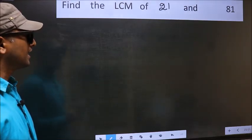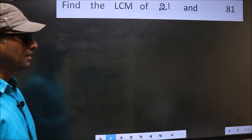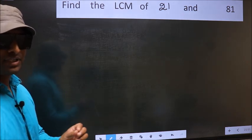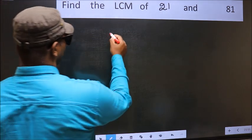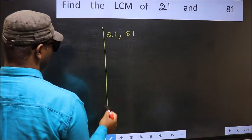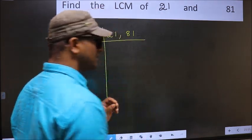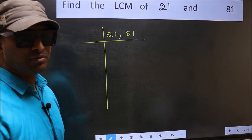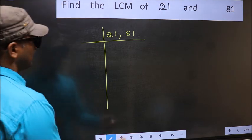Find the LCM of 21 and 81. To find the LCM, we should frame it in this way: 21 and 81. This is your step 1. Now you should focus on the first number, which is 21 here.